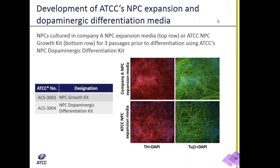Both neural progenitor cell growth and dopaminergic neuron differentiation media have been validated in all of our NPC lines. For example, normal NPCs cultured in either an alternative supplier's media or our own growth media for three passages exhibited similar efficiency of dopaminergic differentiation after three weeks of treatment. So ATCC can provide a complete culture solution for the growth, expansion, and dopaminergic differentiation of neural progenitor cells.